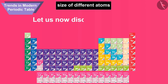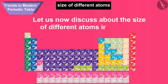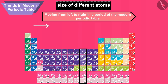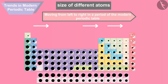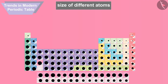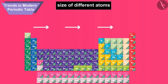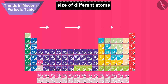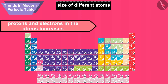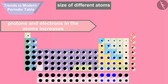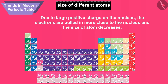Let us now discuss the size of different atoms in a period. On moving from left to right in a period of the modern periodic table, the size of atoms decreases. As we move from left to right in a period, the atomic number of the elements increases, which means the number of protons and electrons in the atoms increases. Due to the large positive charge on the nucleus, the electrons are pulled in more closely to the nucleus and the size of atom decreases.